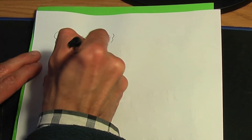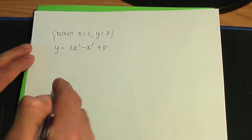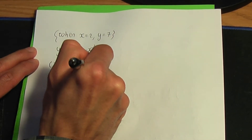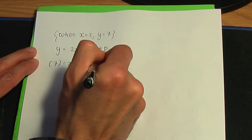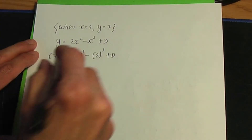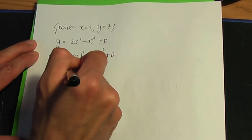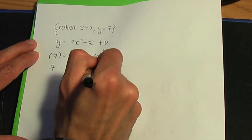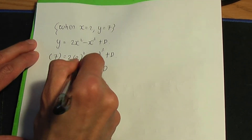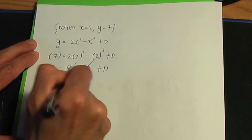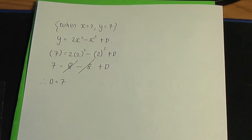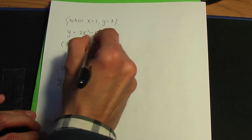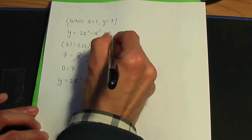Expanding: 2 squared is 4, times 2 is 8, minus 2 cubed which is also 8, plus d. The plus 8 and minus 8 cancel, giving d equals 7. So the constant d is 7.